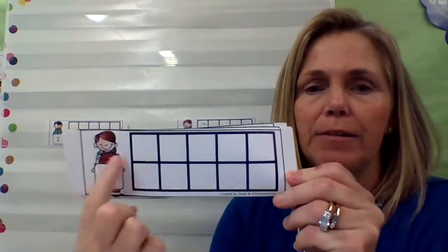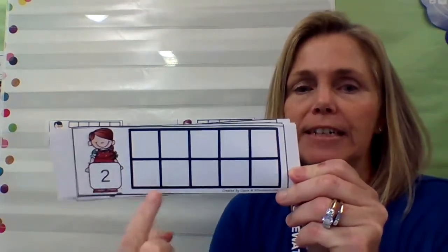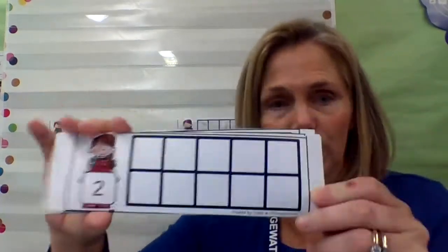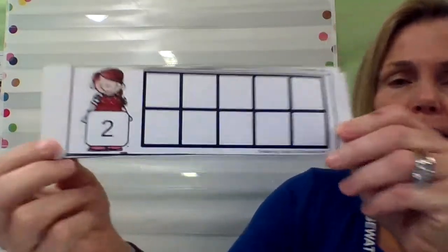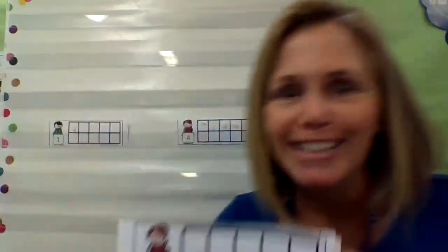Remember, the 10 frames have 10 boxes: 1, 2, 3, 4, 5, 6, 7, 8, 9, 10. Each strip has a number on it. Do you see that number? What number do you see? Did you say 2? You're right!